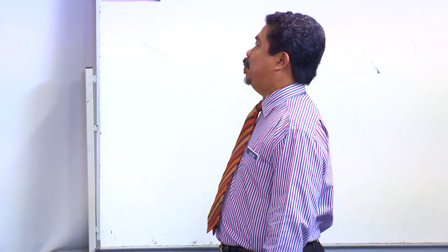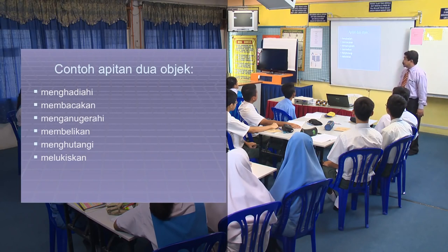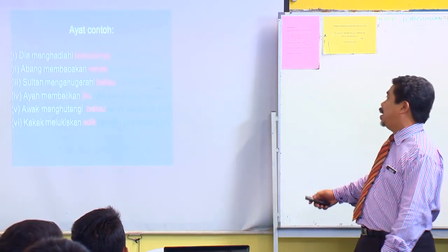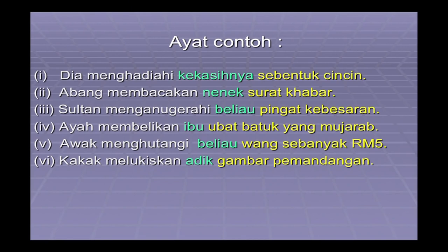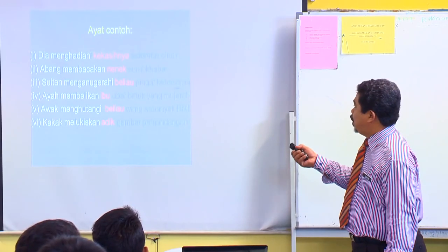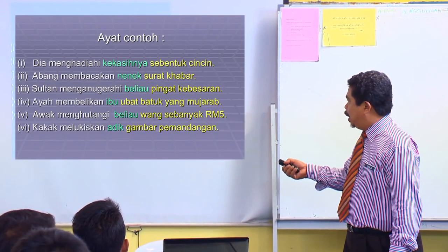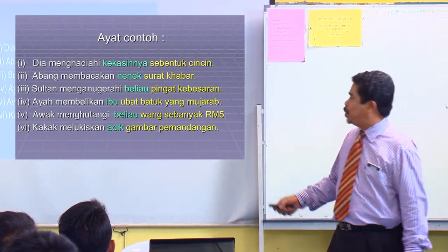Sekarang kita lihat apitan dua objek pula: menghadiahi, membacakan, menganugerahi, membelikan, menghutangi, melukiskan. Perkataan ini memerlukan dua objek. Contoh: Dia menghadiahi kekasihnya sebentuk cincin - objek pertama kekasihnya, objek kedua cincin. Abang membacakan nenek surat khabar - objek pertama nenek, objek kedua surat khabar. Sultan menganugerahi beliau pingat kebesaran - objek pertama beliau, objek kedua pingat kebesaran.